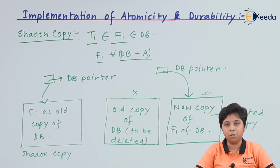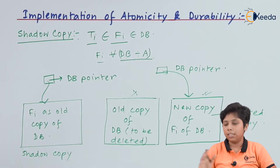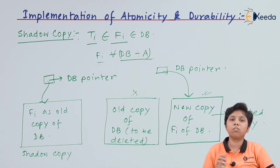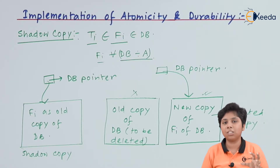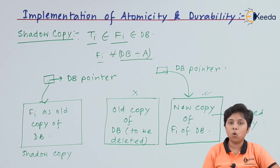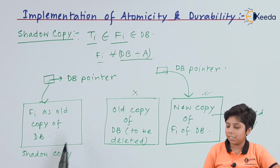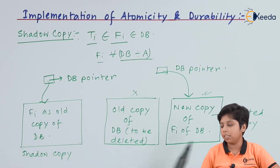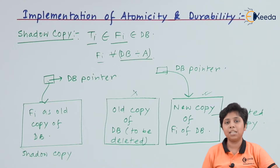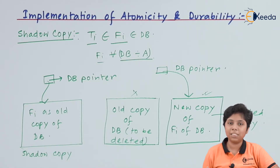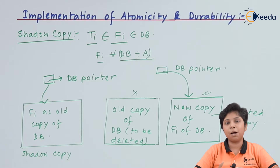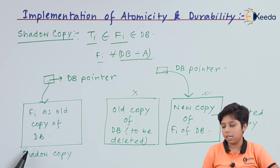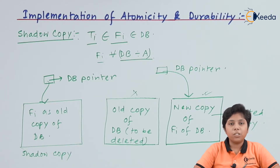How does the transaction execution support atomicity and durability? When a transaction has started and committed its execution, the new copy of Fi will be written back to the disk to mark the transaction as completed. We maintain the DB pointer, the shadow copy, and the updated new copy. If any problem occurs in the midst of the transaction, the old shadow copy remains and can be referenced to recover the original data.